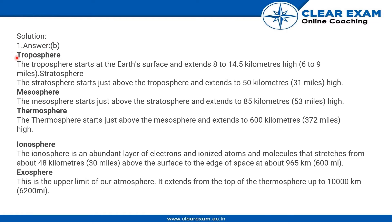What we have here are the following layers: the troposphere, mesosphere, thermosphere, ionosphere, and exosphere. The first and nearest is the troposphere. The troposphere starts at the earth's surface and extends 8 to 14.5 km high, that is 6 to 9 miles.